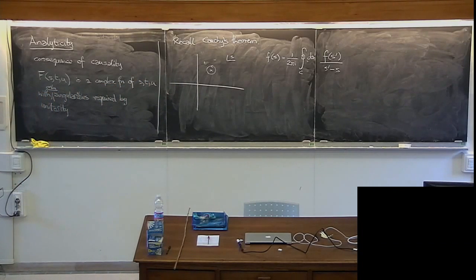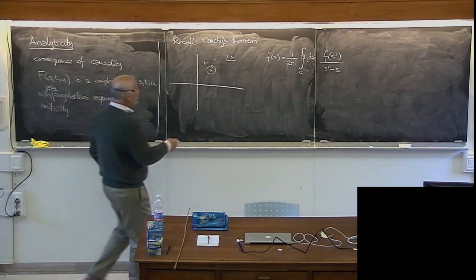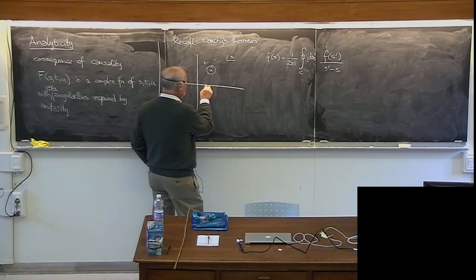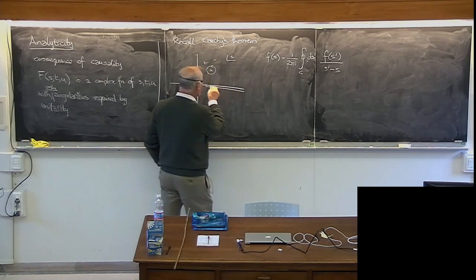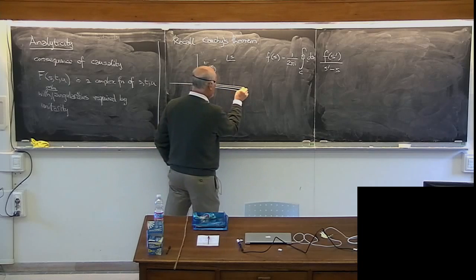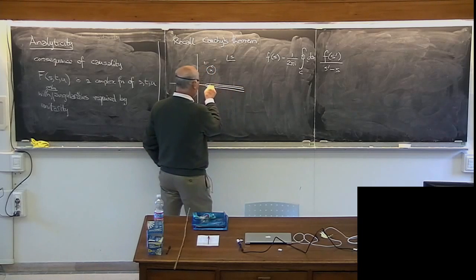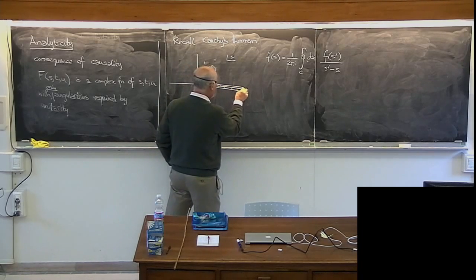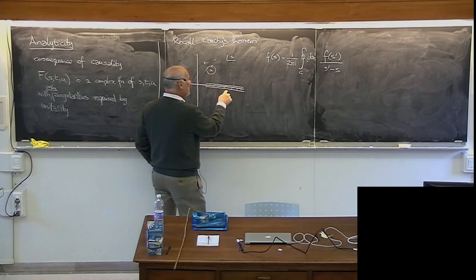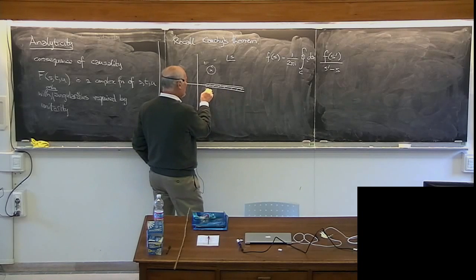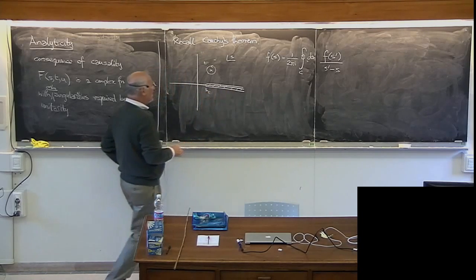All our partial wave amplitudes have cuts in them, and these cuts start at some threshold. Let's assume they only have a cut on the right-hand side. The value above the cut and the value below it are not the same — call that value s_t.